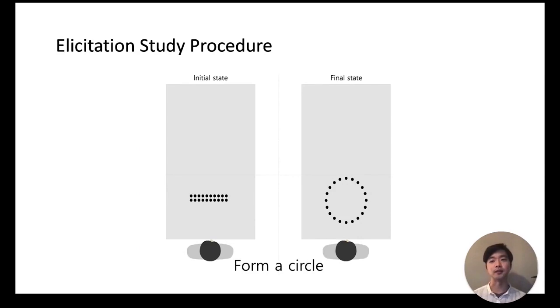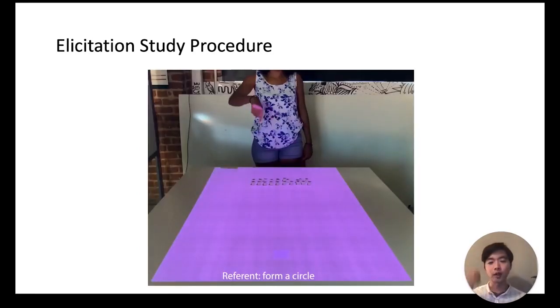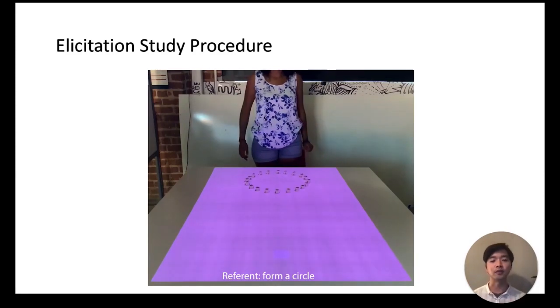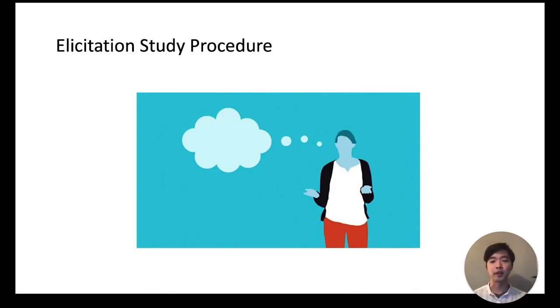The study procedure was as follows. First we showed the participants a pictorial flashcard containing the initial and final state of the robots. We then asked them to perform whatever action they think is appropriate to command the robots to go from the initial to the final state. We told them there were no constraints and we used a Wizard of Oz study design where the study operator initiated the robot behaviors in response to the participant action. After each trial we asked the participants to recall and explain their actions to get a better understanding of what they did and why they did it.